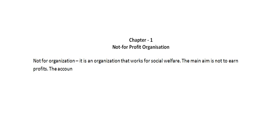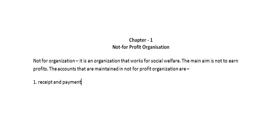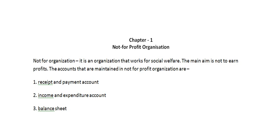The accounts maintained in a not for profit organization are: first, receipt and payment account; second, income and expenditure account; and third, the balance sheet. So these are the two accounts and one statement prepared in a not for profit organization. Today we will be discussing the first one, that is receipt and payment account.